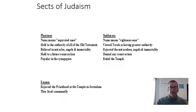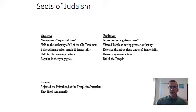The Essenes moved away into the desert, rejecting both the priesthood and the temple in Jerusalem — so they rejected both Pharisee and Sadducee structures. They also lived communally, sharing what they had. I asked you to think about which group sounds most like a Christian group, and I hope you can see that it's the Pharisees.